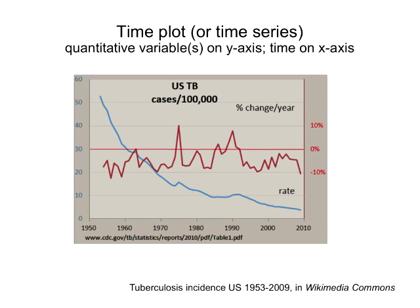One other kind of relationship graph with a particular name is a time plot or time series. Time is on the x-axis, and your other quantitative variable is on the y-axis. In this graph there are actually two quantitative variables on the y-axis. It's tuberculosis incidence in the U.S. from 1953 to 2009 — the title is from Wikimedia Commons. You can see the rate per 100,000 cases and the percent change over time.